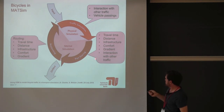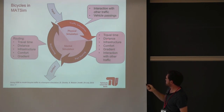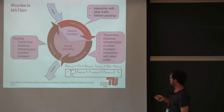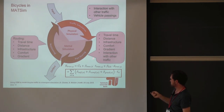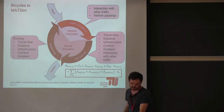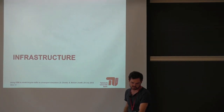Let me show how we adapted MATSim. When plans are scored at the end of a simulated day, we now take into account not only travel time and distance but also infrastructure, comfort, and gradient, as well as interaction with other traffic. The scoring function in its default version has been extended with a new term covering infrastructure, comfort, and gradients, multiplied by the length of the specific link being scored. Let me now focus on what adaptations we made and especially how we inferred the required data from OpenStreetMap.